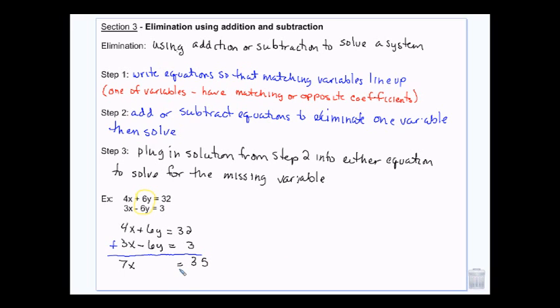And 32 plus 3 is 35. So 7X equals 35. Divide both sides by 7. X equals 5.